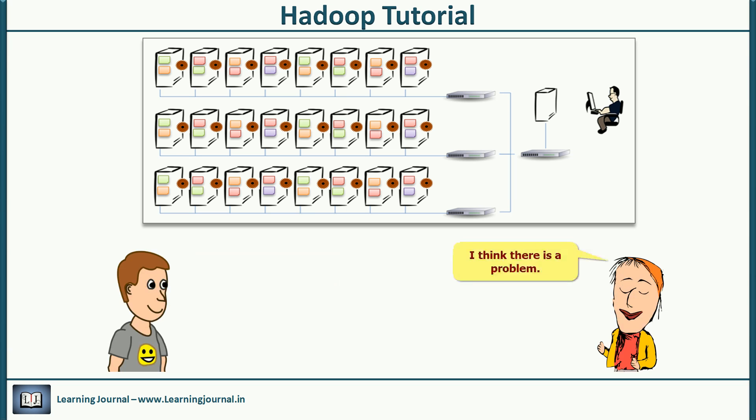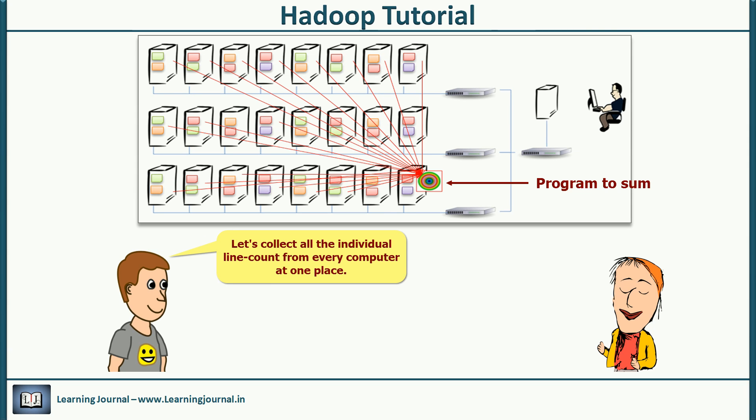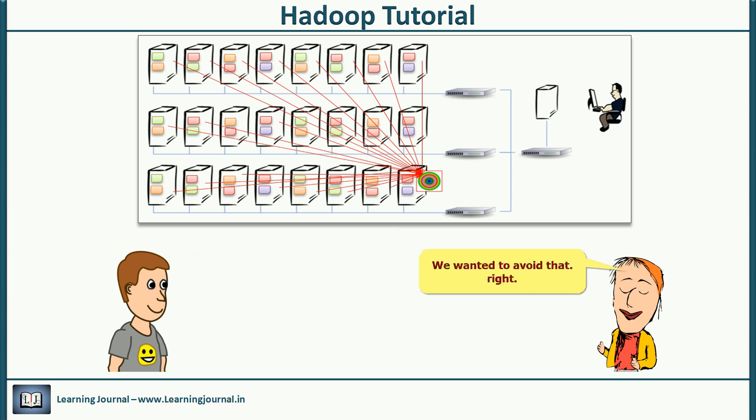I believe there's a problem. We have multiple counts. Each computer knows the line count of its local blocks, but no one knows the final total number. We wanted to get the final total count. That's an easy problem. Let's collect all the individual line counts from every computer at one place. We can sum it up to get the final total. But we'll be moving data again. We wanted to avoid that. You're getting the sense of it. Our aim is to avoid data movement, and we avoided moving 20 terabytes. Now we're moving just a few numbers. That shouldn't be a problem.